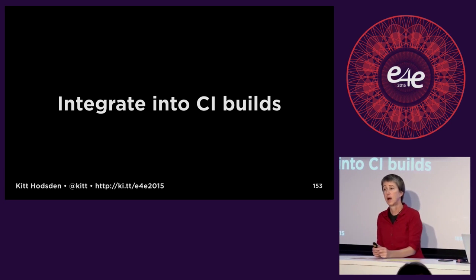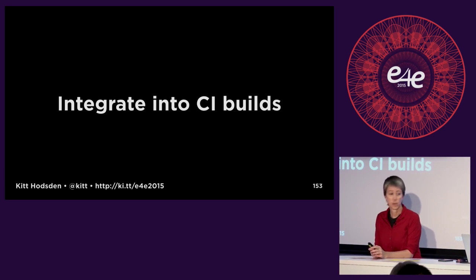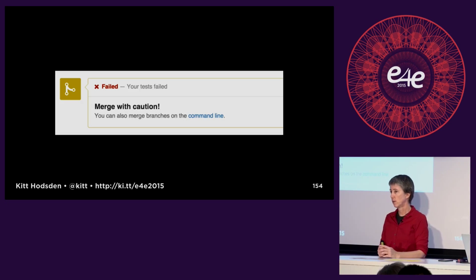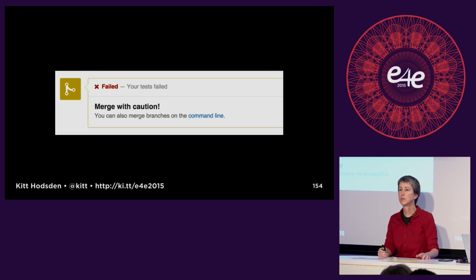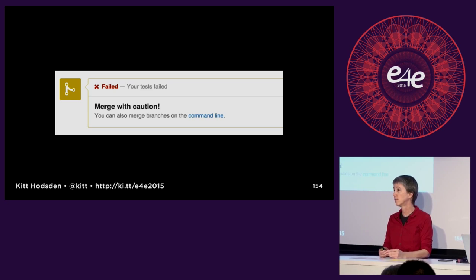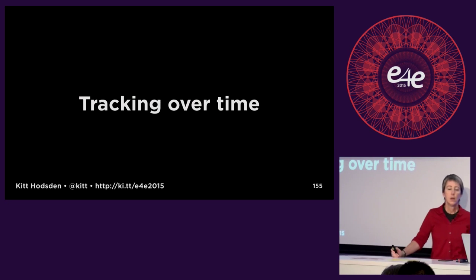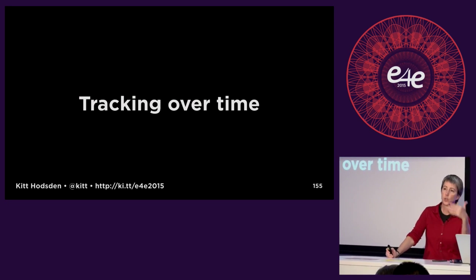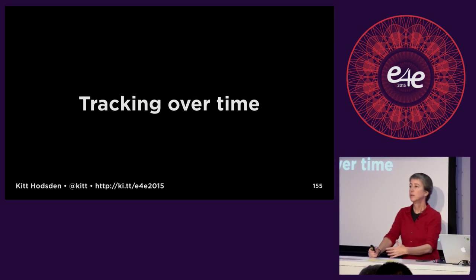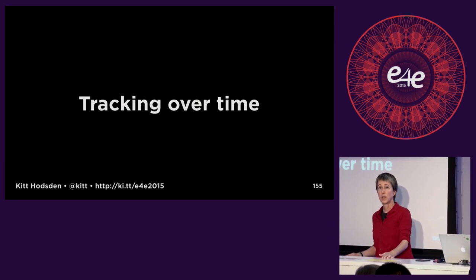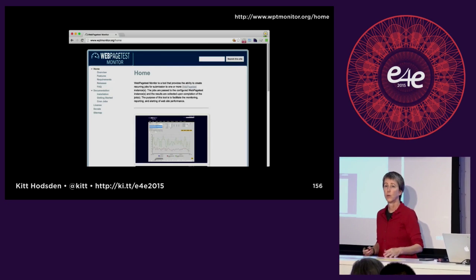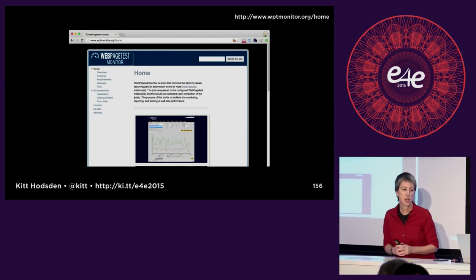Now what do we do? We can integrate these into CI — continuous integration builds. There are well-documented ways to get this into GitHub; if you do any kind of builds off GitHub, you can have it fail. Push your fails to GitHub. Individual runs are great, but you want to see how you're doing over time.